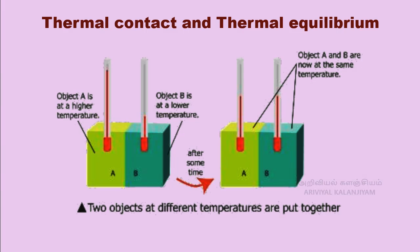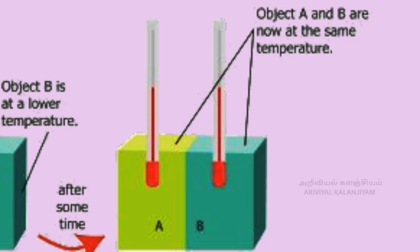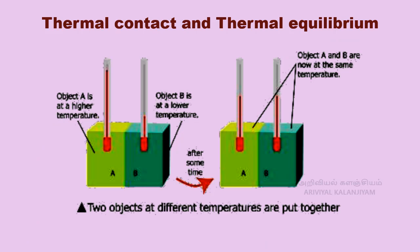Thermal contact and thermal equilibrium. Consider two bodies A and B. Let the temperature of A be higher than that of B. On bringing bodies A and B in contact, heat will flow from the hot body A to the cold body B. Heat will continue to flow till both bodies attain the same temperature. The temperature determines the direction of flow of heat. Two objects are said to be in thermal contact if they can exchange heat energy. Thermal equilibrium exists when two objects in thermal contact no longer affect each other's temperature.